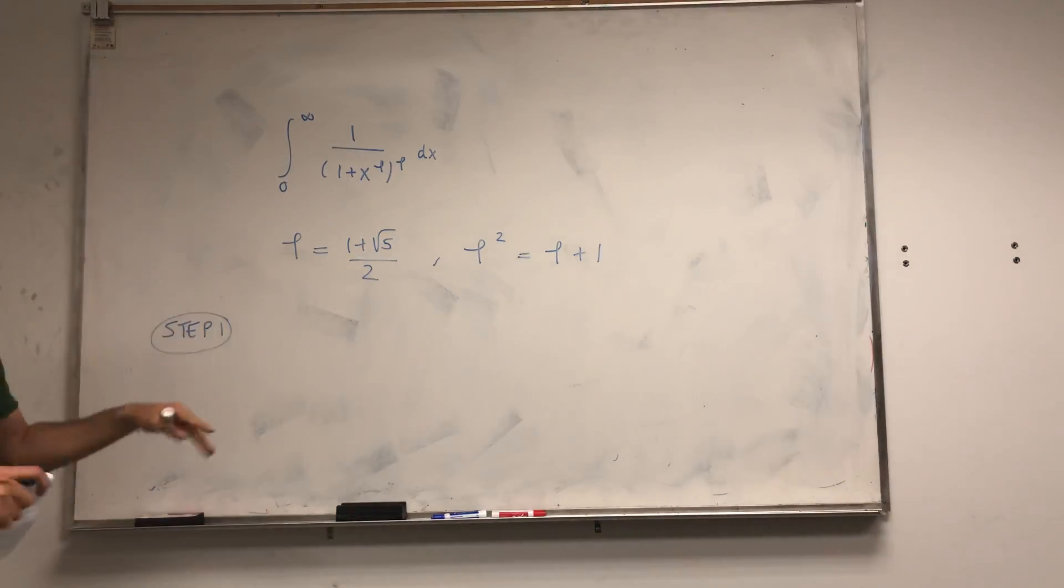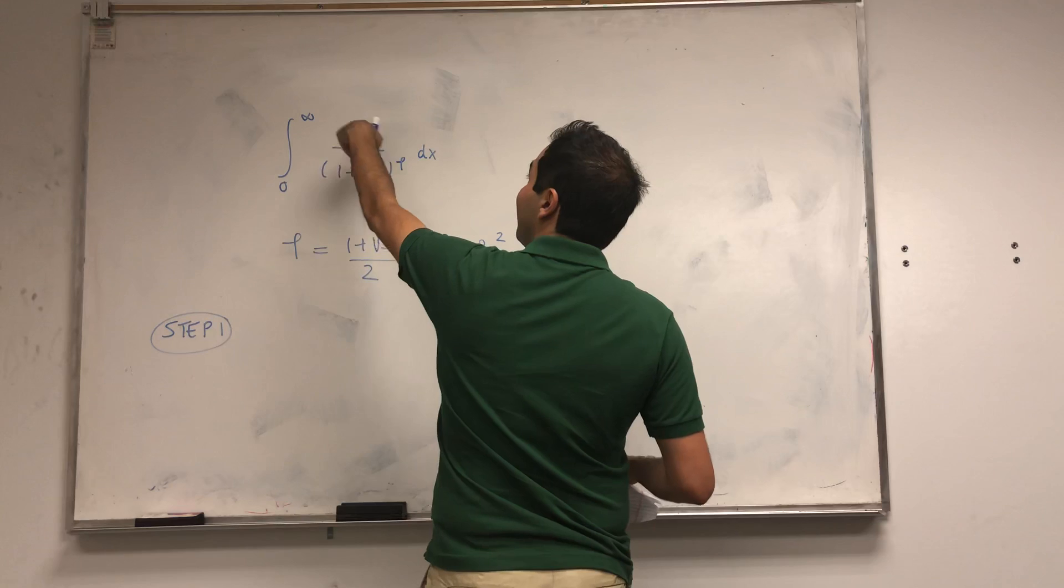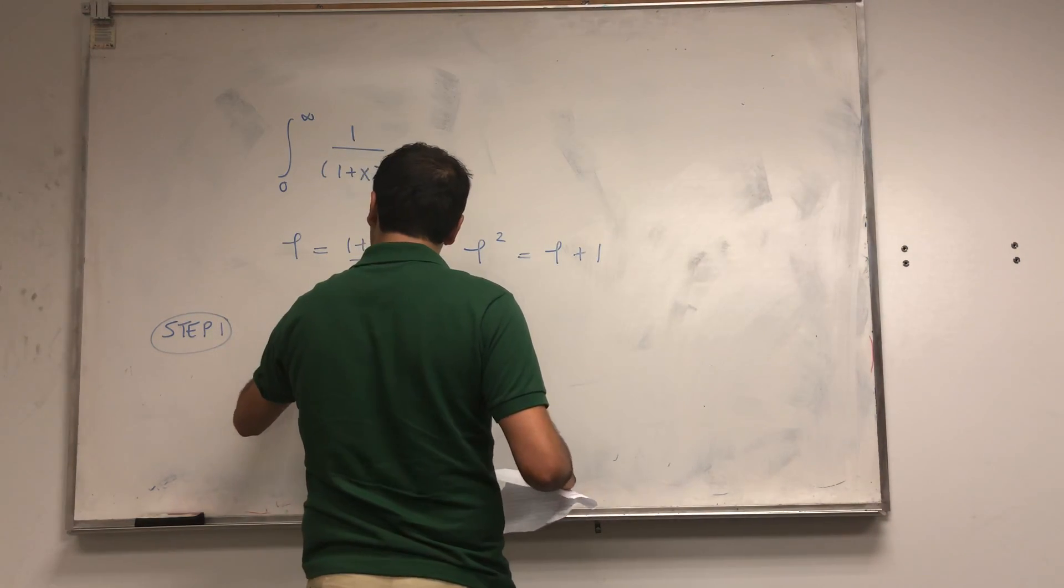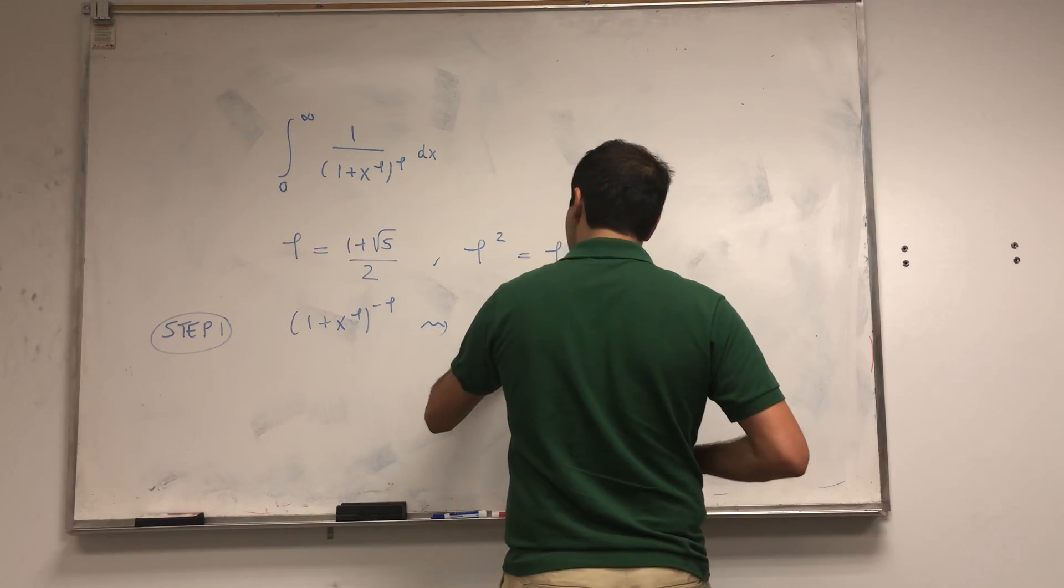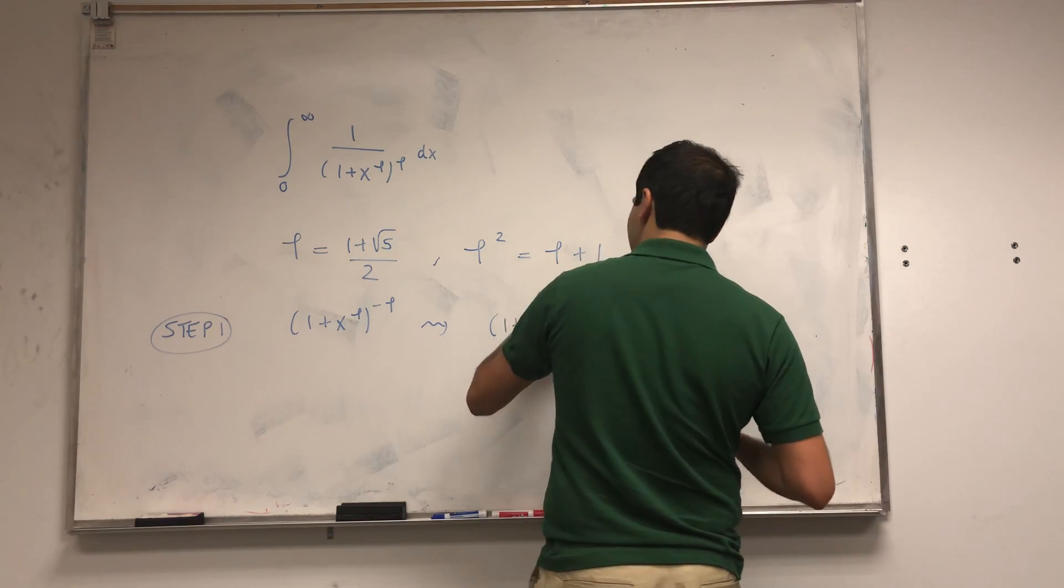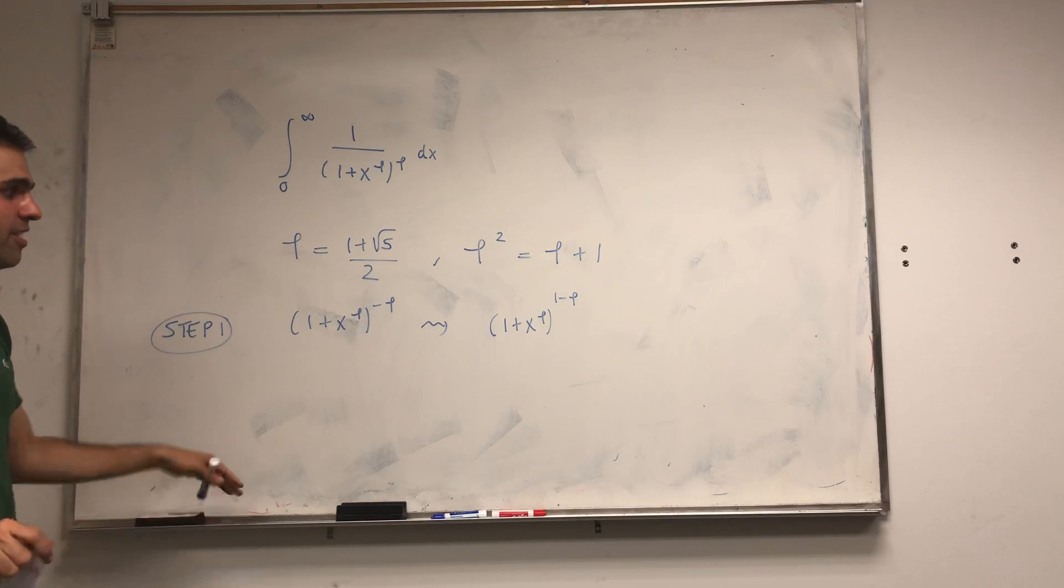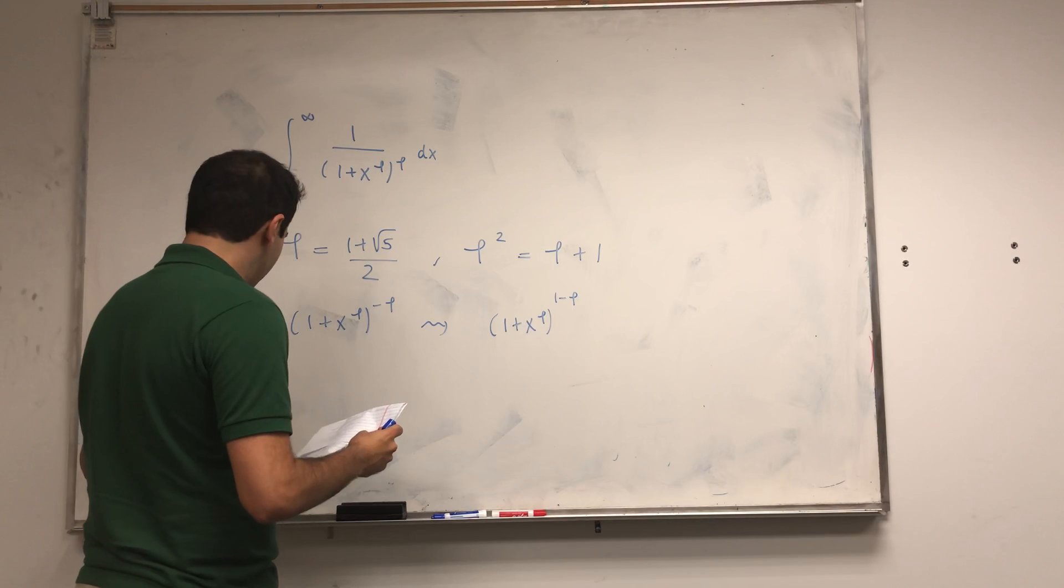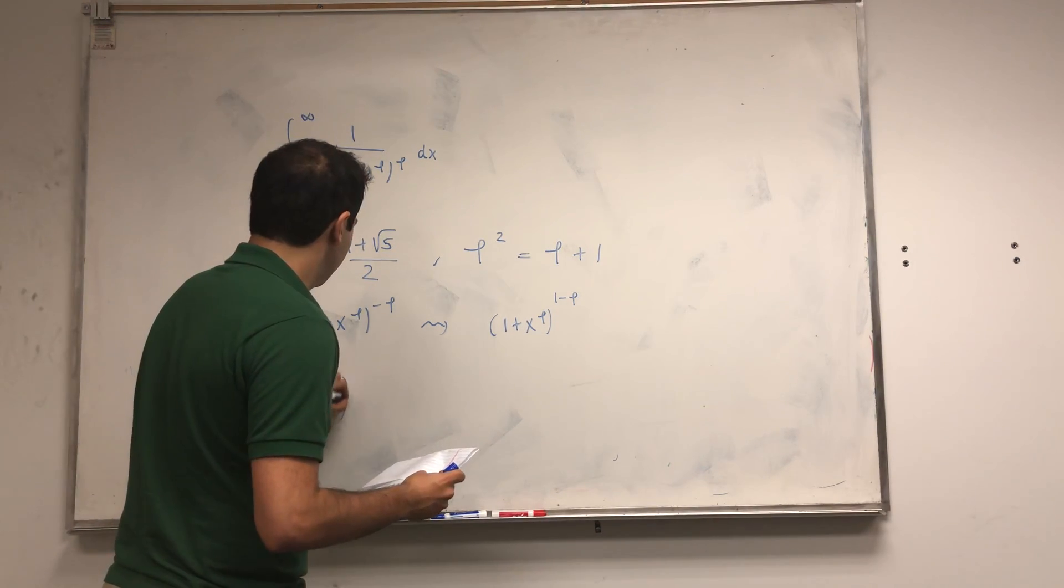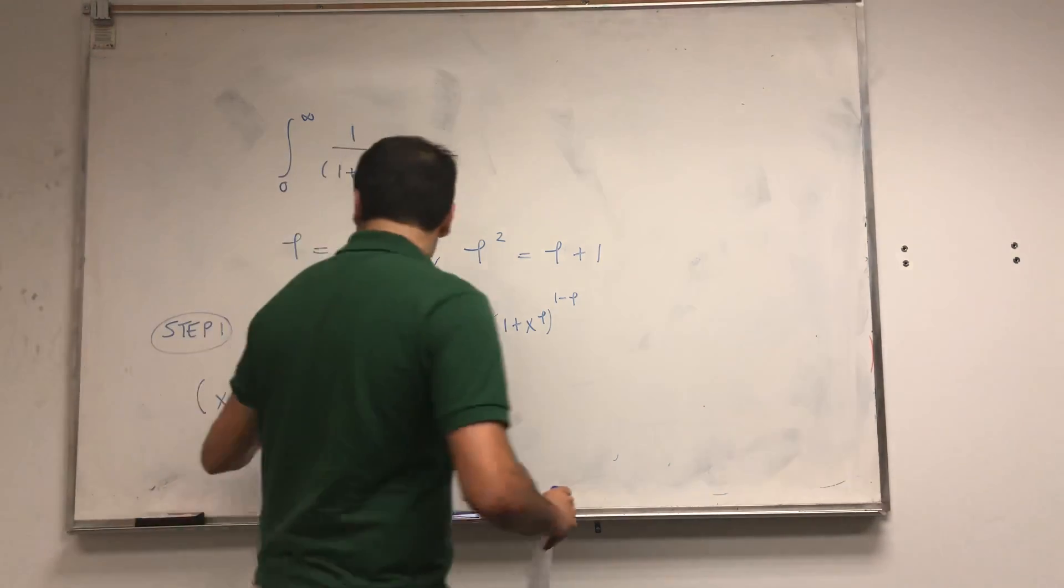I'm going to find an antiderivative and show that it's an antiderivative, but the question is how can we guess it? Well, this thing you can just write as (1 + x^phi)^(-phi). I guess one antiderivative would be (1 + x^phi)^(1-phi). This almost works except it turns out we have to multiply this by x. So let's consider x times (1 + x^phi)^(1-phi) and differentiate.